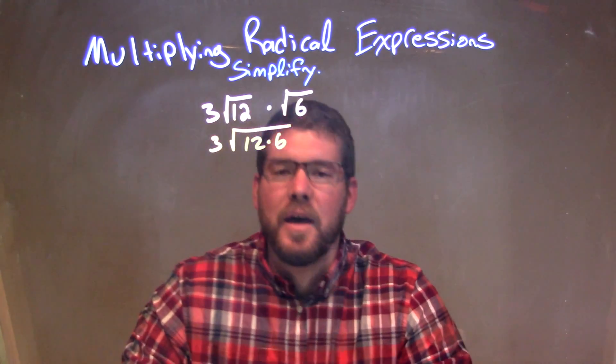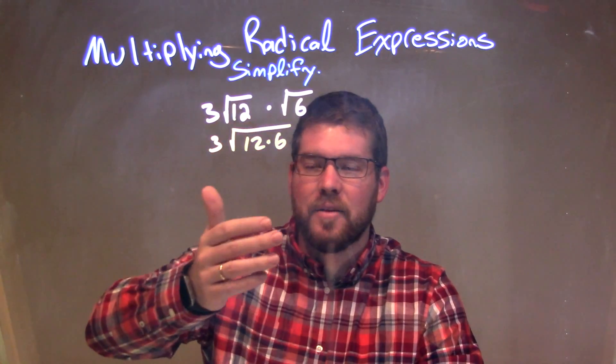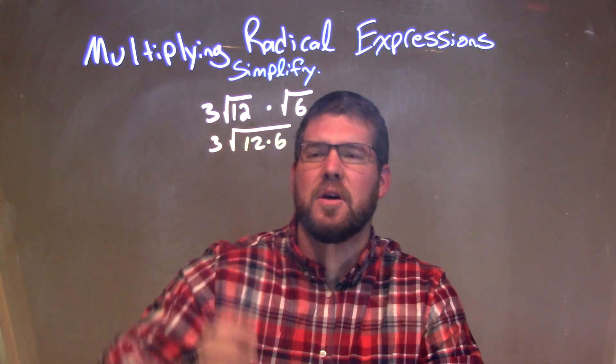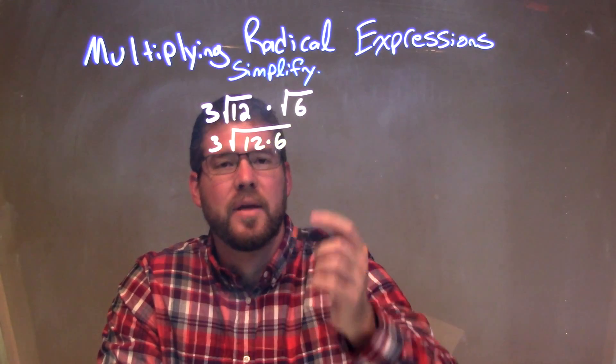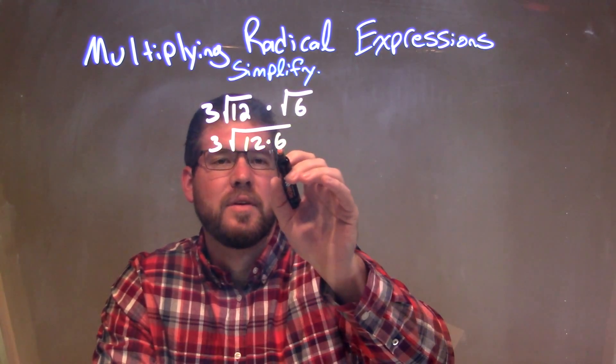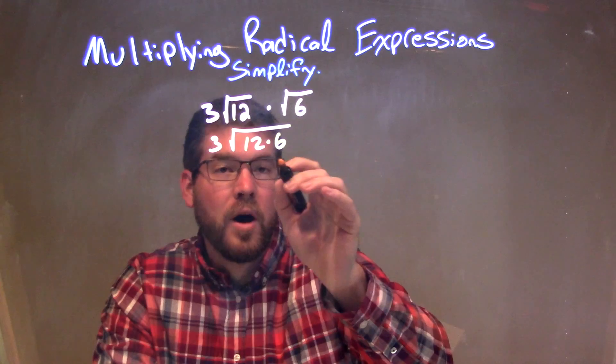Now, what I'm going to do here is break this down and do prime factorization. You can multiply 12 times 6 and then break that down, but 12 times 6 is already kind of broken down some, so let's break down each one.